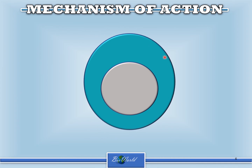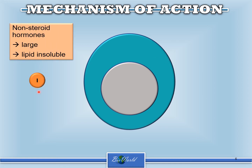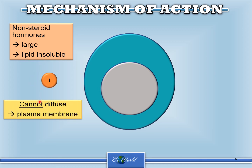This is the cell diagram I've used previously in the steroid hormone discussion. This is the hormone insulin, which is a non-steroid hormone. It's important to remember these two characteristics: because it is made of a polypeptide, it is going to be a large molecule and it is water-soluble, meaning it is lipid insoluble. So when this hormone wants to try to diffuse across the plasma membrane, it cannot, because it is not lipid soluble.